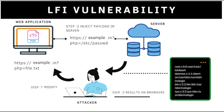Local file inclusion occurs when an application includes a file as user input without properly validating it, while RFI or remote file inclusion occurs when a web application receives input that includes a path to a file but isn't properly sanitized.